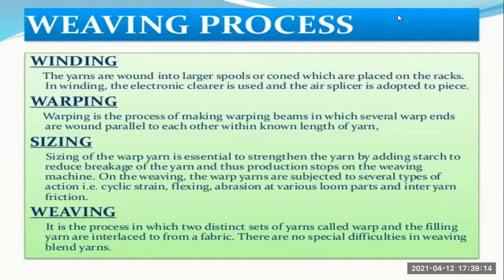The next step is the weaving preparation process, which includes four different steps. Winding: the yarns are wound into larger spools or cones placed on racks, and an electronic layer and air splicers are used. Grouping: several rope ends are wound parallel to each other within a known length of yarn. Sizing: the warp yarn is sized with starch to reduce breakage and production stops on the weaving machine. The warp yarns are subjected to cyclic strain, flexing, abrasion, and inter-yarn friction.